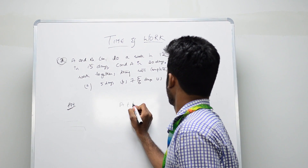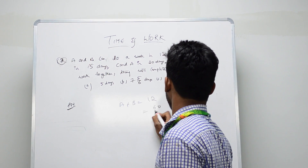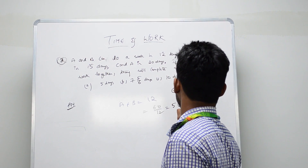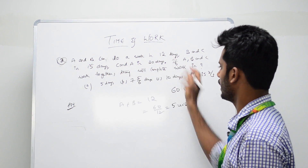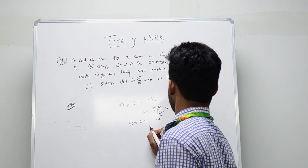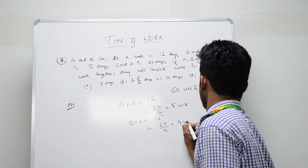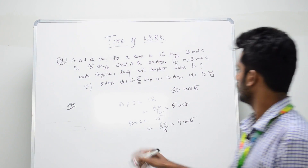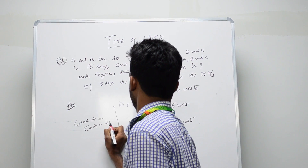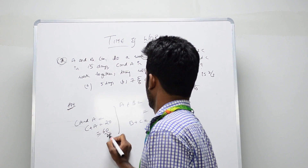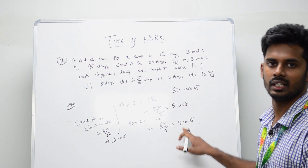A plus B can do the work in 12 days, so their per-day units are 60 divided by 12, which is 5 units. B and C can do it in 15 days, so 60 divided by 15 is 4 units. C and A can do it in 20 days, so 60 divided by 20 is 3 units. Now you have 5 units, 4 units, and 3 units for the three pairs.